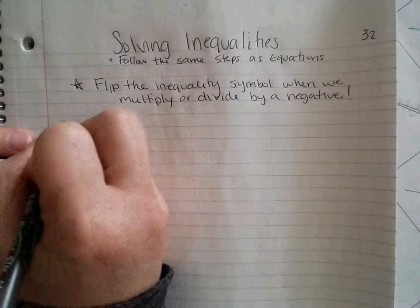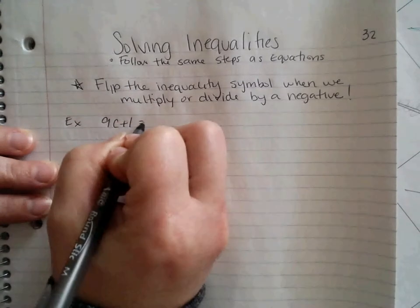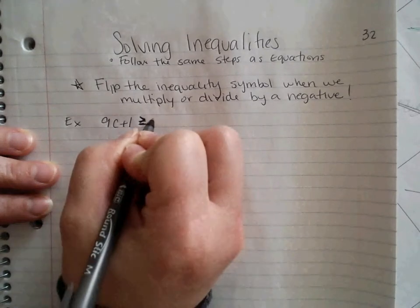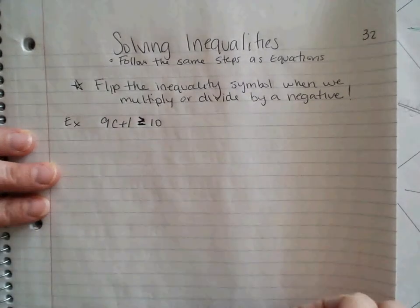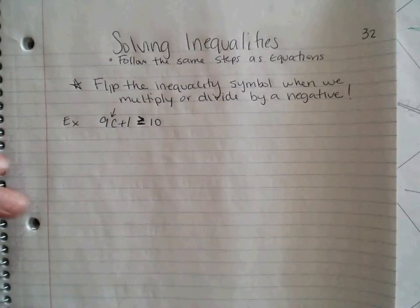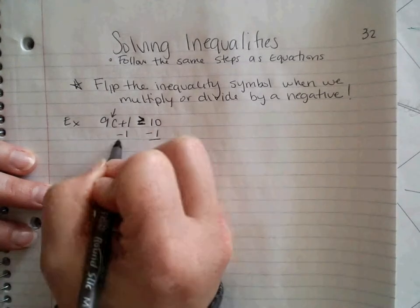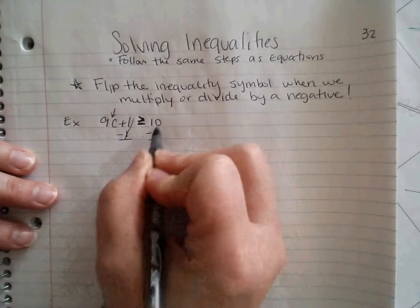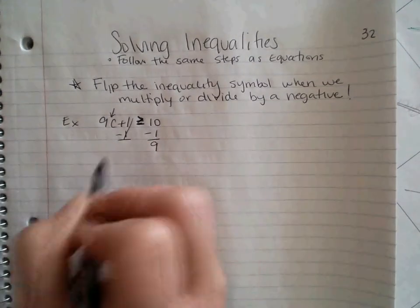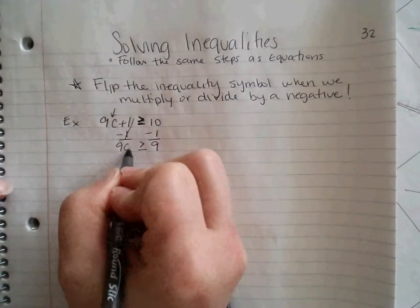So let's look at some examples. If I give you 9c plus 1 is greater than or equal to 10. So, first step, I'm going to save my variable for last. It's not one of the two special ones. So I have a plus 1. I'm subtracting 1 from both sides. Cancel that. 10 minus 1 makes 9. I'm going to bring down what's left. Instead of bringing down an equal sign, I'm going to bring down my greater than or equal to and my 9c.